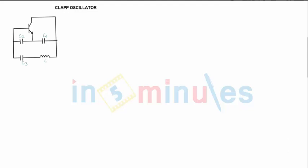Hi, welcome to In 5 Minutes. We are done with the Colpits oscillator. Next is the Clapp oscillator, which is also called the modified Colpits oscillator. Instead of the single inductor, you can see one capacitor is in series with the inductor.